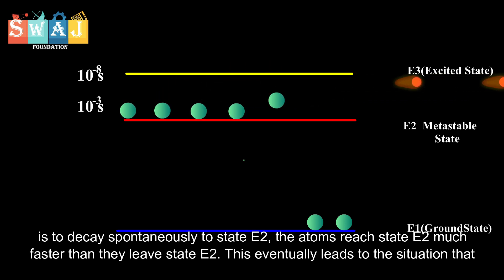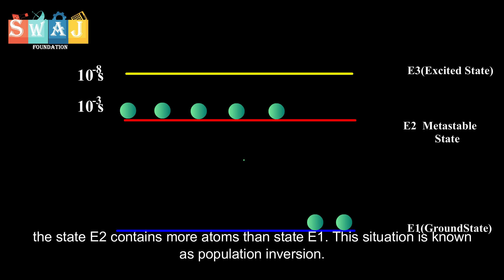The atoms reach state E2 much faster than they leave state E2. This eventually leads to the situation that the state E2 contains more atoms than state E1. This situation is known as population inversion.